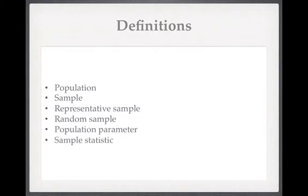Two more terms to cover are parameter and statistic. A characteristic of the population — say the mean quality of life score in our population — is technically referred to as a parameter. Characteristics of a sample are called statistics, so the average quality of life in our sample would be a statistic. It's largely semantics, but it's useful to know because it comes up all the time when reading about statistics.